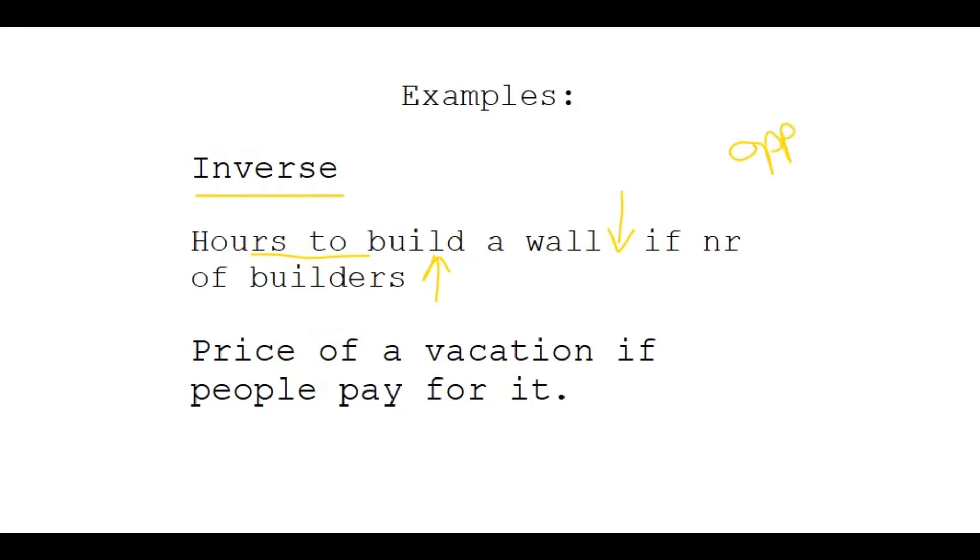And then the price of a vacation. Now you could put anything in, pizza, movie tickets. The prices will always decrease if more people pay for it. So if you're a group of five going and you split the bill, it's actually going to be a whole lot cheaper. And it's also true if you swap both directions of the arrows.